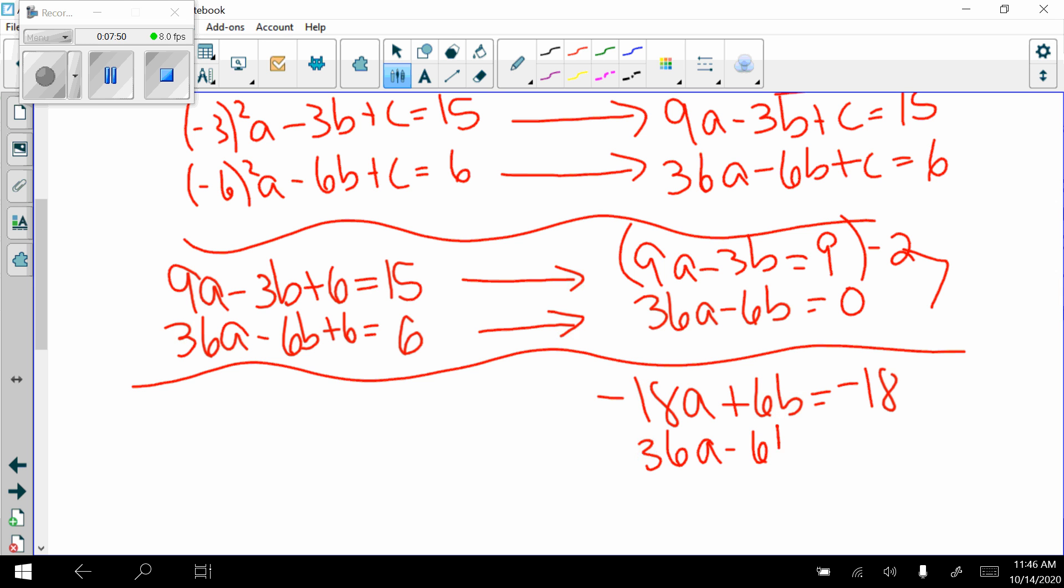So now I have to pick one equation to get rid of either a or b. I'm going to multiply this top equation by negative 2, which will get rid of b for me. So when I do that, I get negative 18a plus 6b equals negative 18. Rewrite the bottom equation. Add them together. Negative 18a plus 36a gives me 18a. My b's cancel equals negative 18. Divide both sides by 18, I get a equals negative 1.